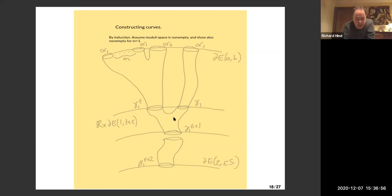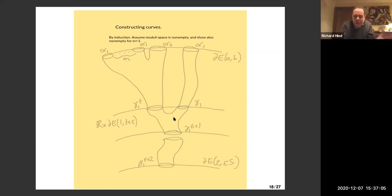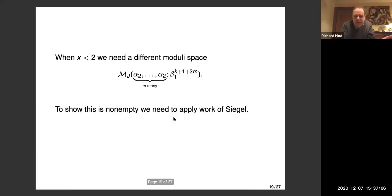That's enough to prove, in these examples, the area class version of the shape. If you want the Hamiltonian version of the shape, you also have to understand what's happening when X is less than two, and there we got a bit stuck.